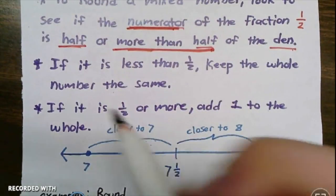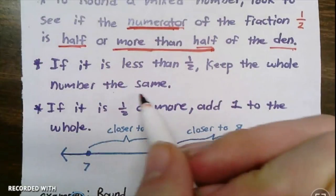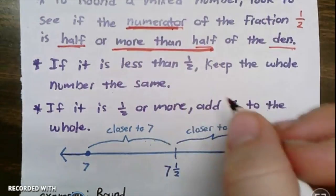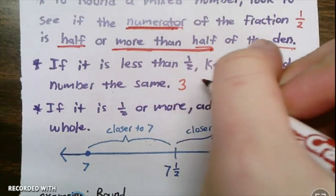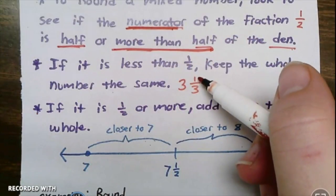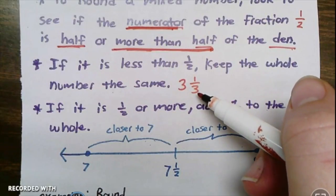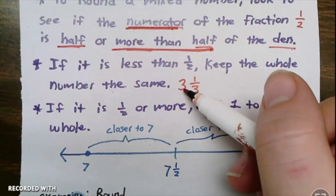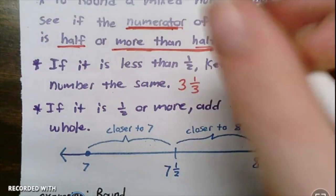If it's less than half, you keep the whole number the same. So if it was like three and one-third, well one is less than half of three, and so the whole number would stay the same. Your answer would just be three.